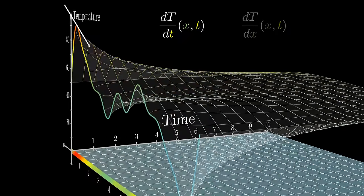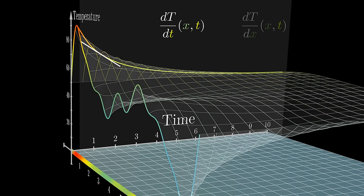But there's also the rate at which a single point on the rod changes with time, what you might think of as the slope of the surface when you slice it in the other direction, parallel to the time axis.